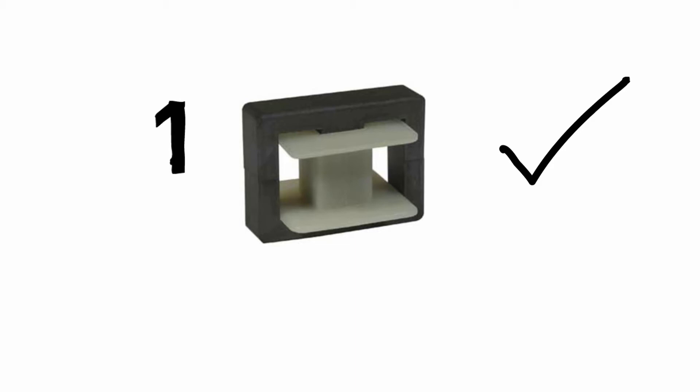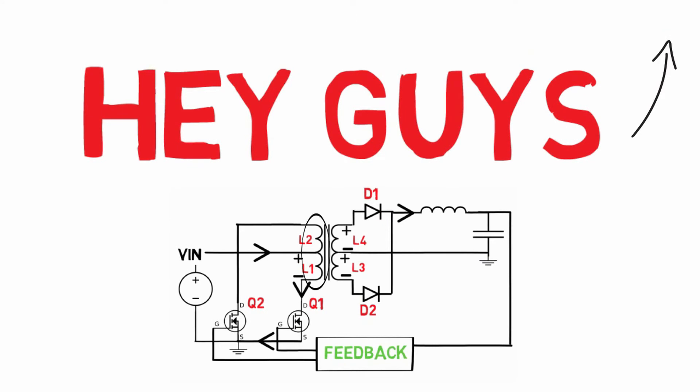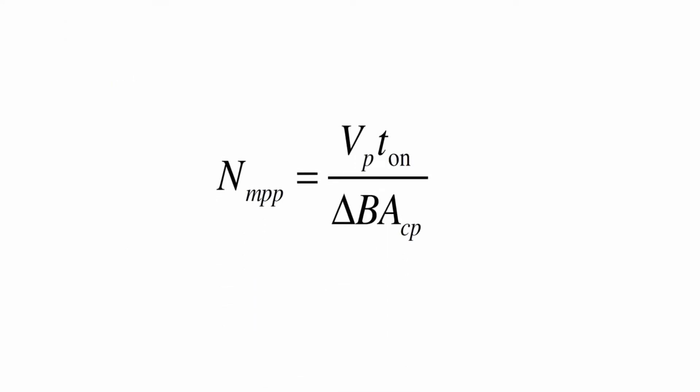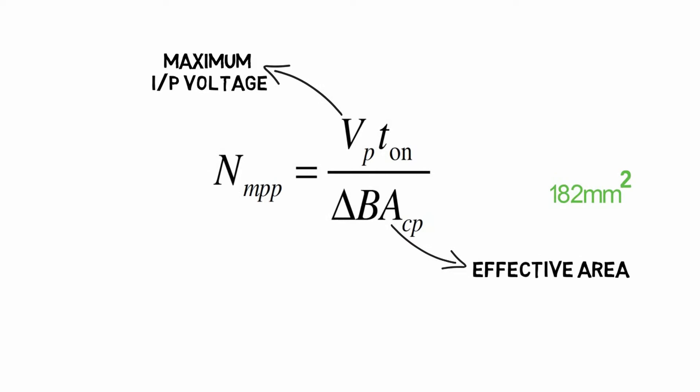We have already selected the core. Now let's jump to the further steps. We have to find out the primary number of turns. The formula is this, where Vp is maximum input voltage, Ae is effective area of the core which is given by the manufacturer in the catalog. Here it is 182 mm square. Vp is voltage coming to the primary side of the transformer.